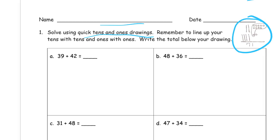It says line up your tens with your tens and your ones with your ones. I'm sure some of you have heard this before — line up your tens with your tens and line up your ones with your ones. We're going to do this with drawings, with quick tens and ones. And it says write the total below your drawing.